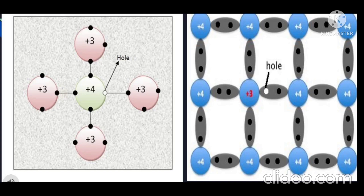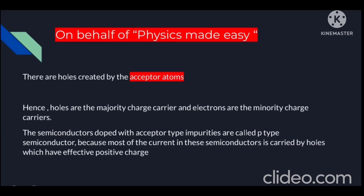This hole starts attracting the electrons from the neighboring covalent bond to fill itself. Now a new hole is created at the side from which the electron has been attracted to fill the previous hole. In this way, a number of holes are formed by adding more and more trivalent atoms in the semiconductor crystal. The holes are created by the acceptor atom. Hence, holes are the majority charge carriers and electrons are the minority charge carriers.